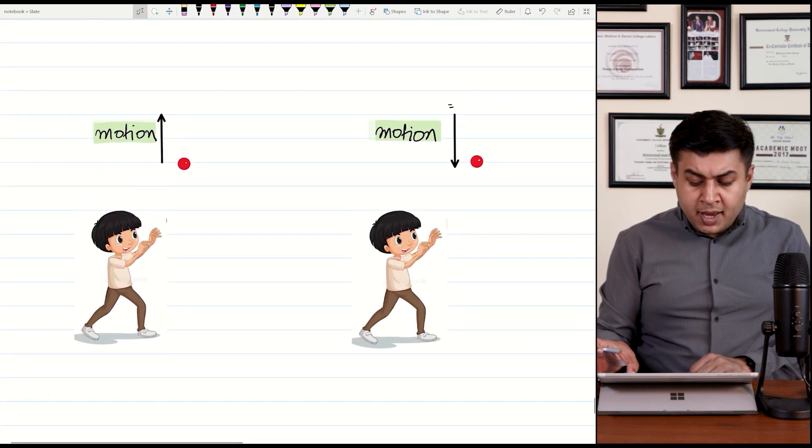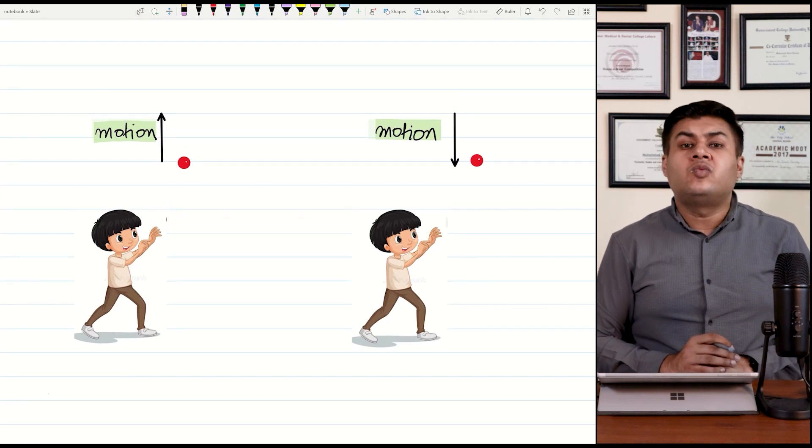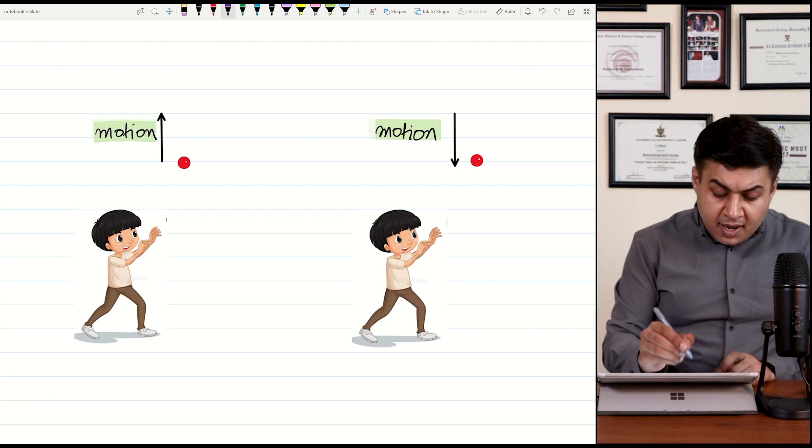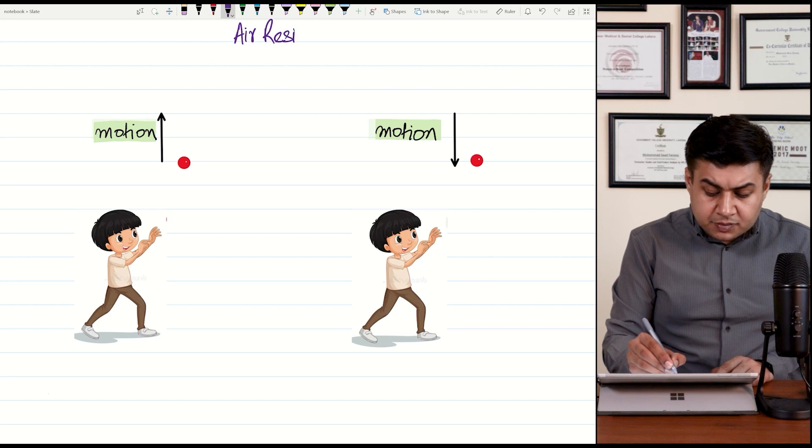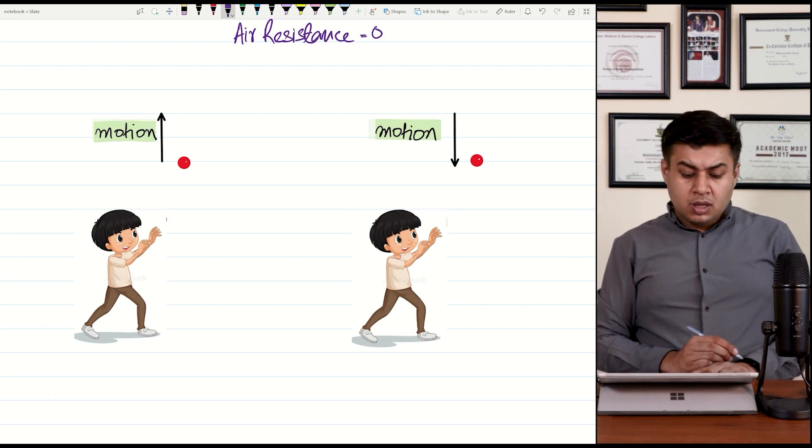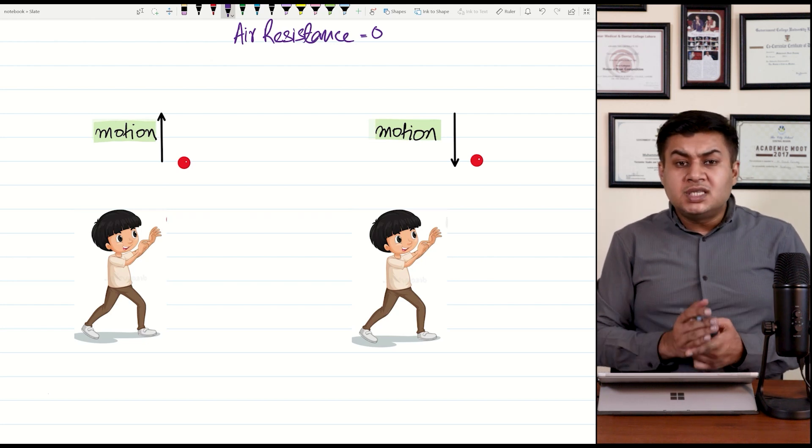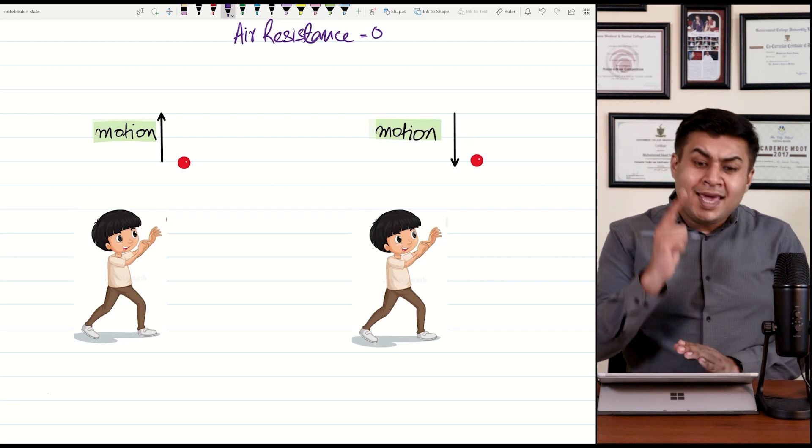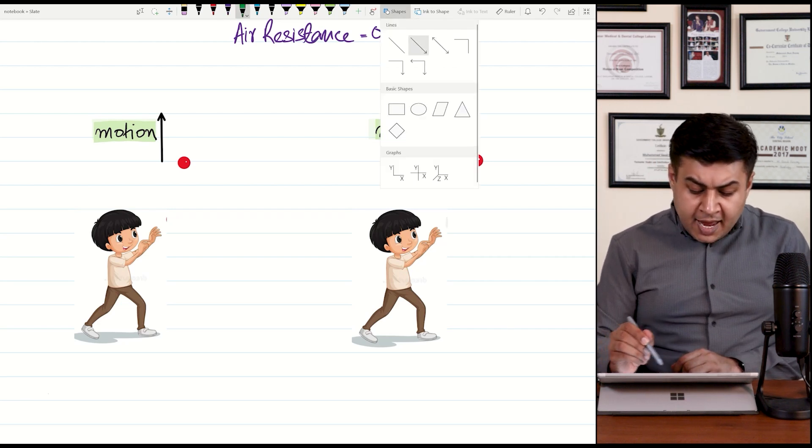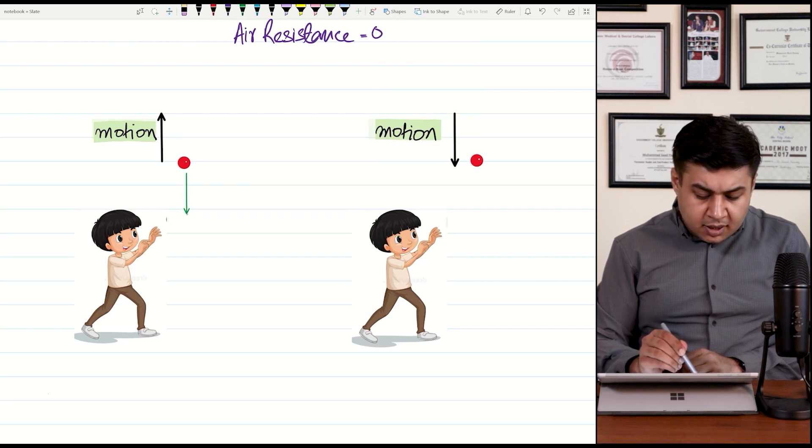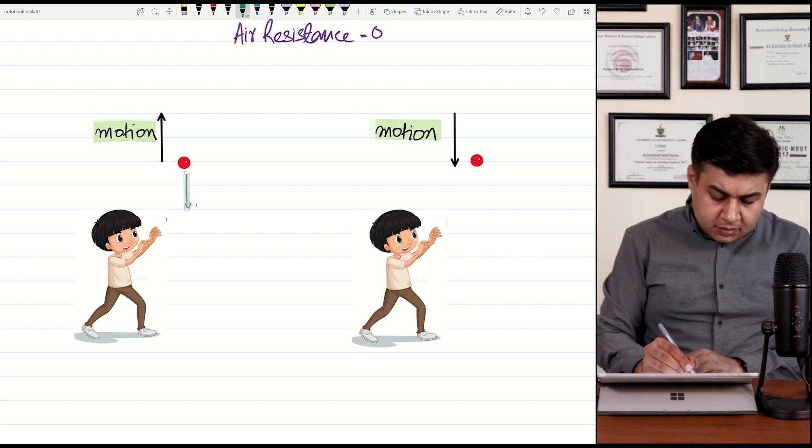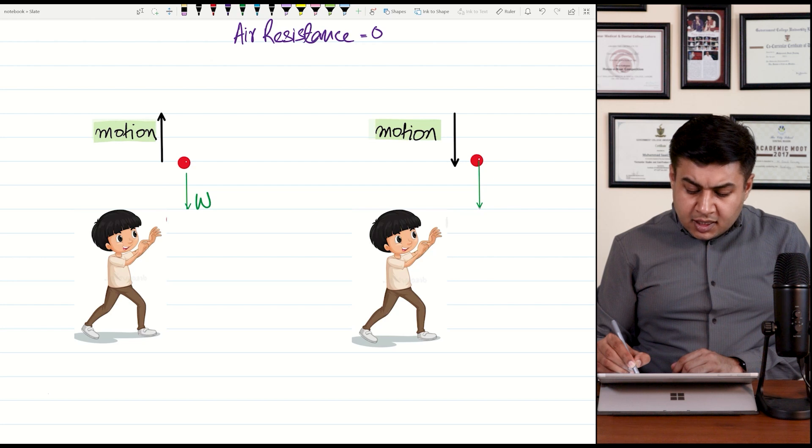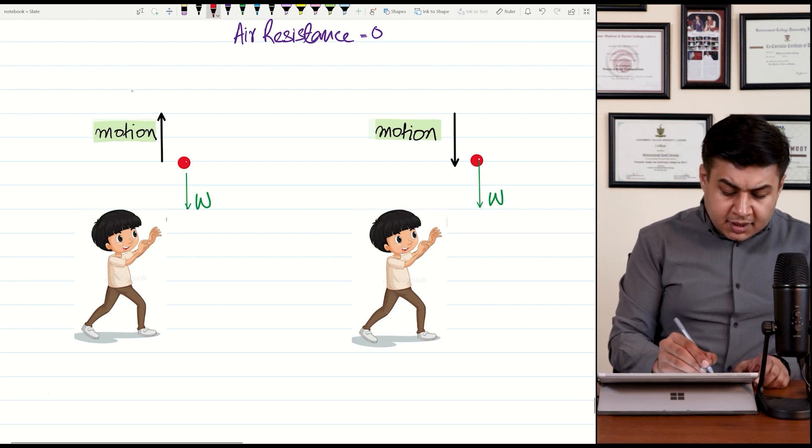Now, here is a boy who is holding a ball. First part of motion mein ball is going upwards. Or second part of motion mein ball is coming downwards. My question from all of you is, what are the visible forces other than air resistance? Air resistance to zero ho gaya. What are the visible forces which are acting on this ball? Aap kehenge ke ball pe ek hi force lag rahi hai and that is its weight. And weight acts vertically downwards. So, this is the arrow for weight.